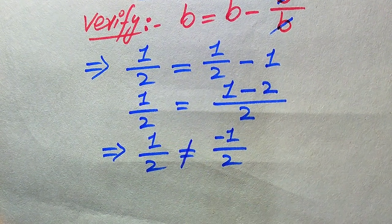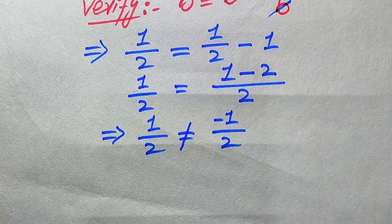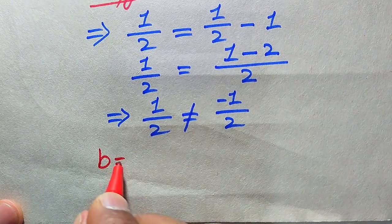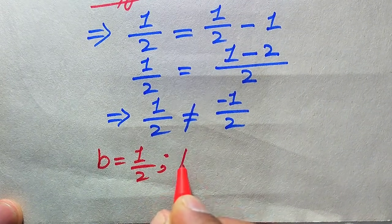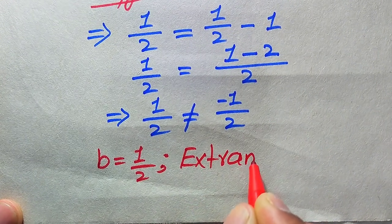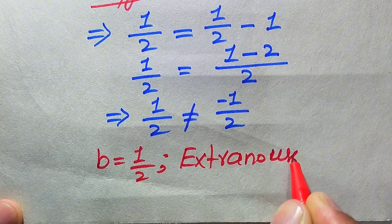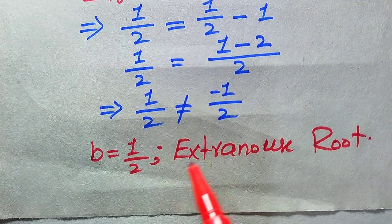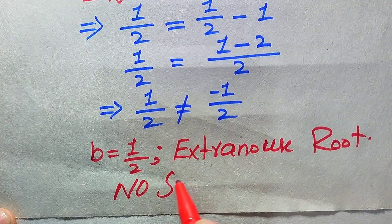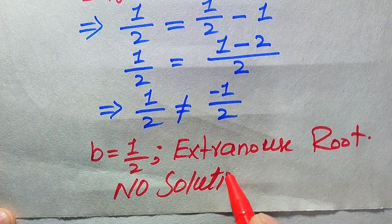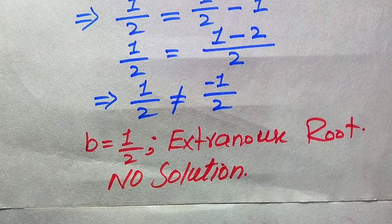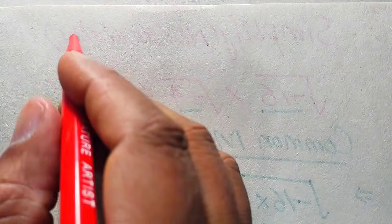Since both sides are not equal, b equals 1/2 does not satisfy the given equation. Therefore, b equals 1/2 is an extraneous root. We conclude that the equation has no solution — this is our final conclusion from the first method.